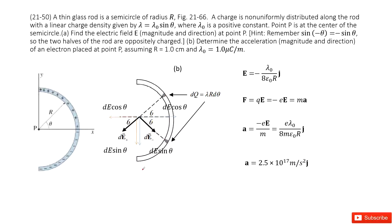Next, we need to determine the acceleration for an electron placed at position P. We already have the electric field. An electron carries one fundamental negative charge, −e. The net force comes from the electric force: F = qE = −e times the electric field. By Newton's second law, F = ma, so we can solve for the acceleration.